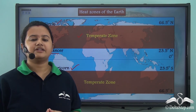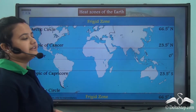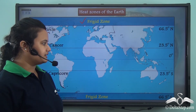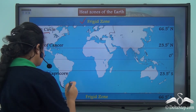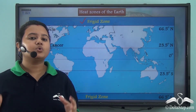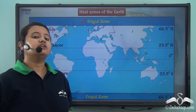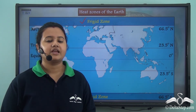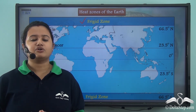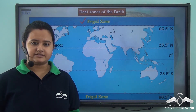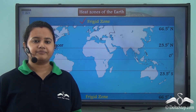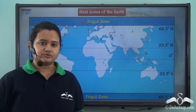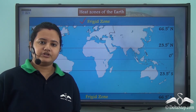The next heat zone is the frigid zone. The north frigid zone lies to the north of the Arctic Circle, while the south frigid zone lies to the south of the Antarctic Circle. The frigid zone is the coldest part of the Earth, lying between the Arctic Circle and the North Pole in the Northern Hemisphere, and between the Antarctic Circle and the South Pole in the Southern Hemisphere. In today's video, we read about the important lines of latitude — equator, Tropic of Cancer, Tropic of Capricorn, Arctic Circle, and Antarctic Circle — and the important heat zones: torrid zone, temperate zone, and frigid zone.